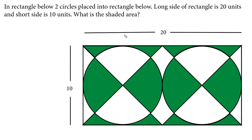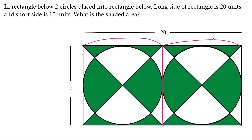In this question, it can be solved with complex calculations, but I prefer to do it a simple way by drawing an auxiliary line here. We immediately have two congruent squares of equal size with side length 10 units, and we can see that the circles inside each square are divided into four equal parts with diagonals.